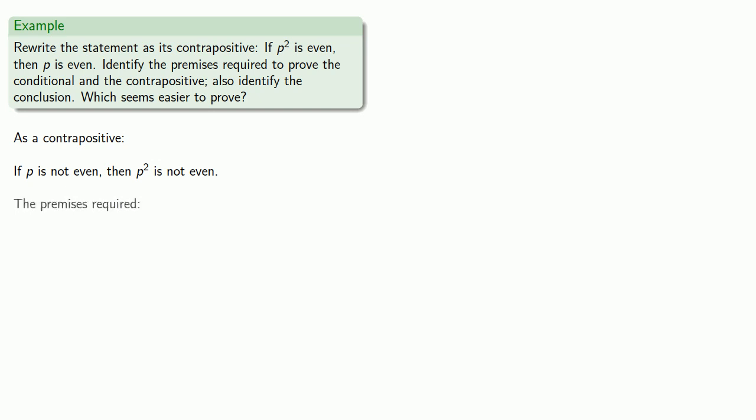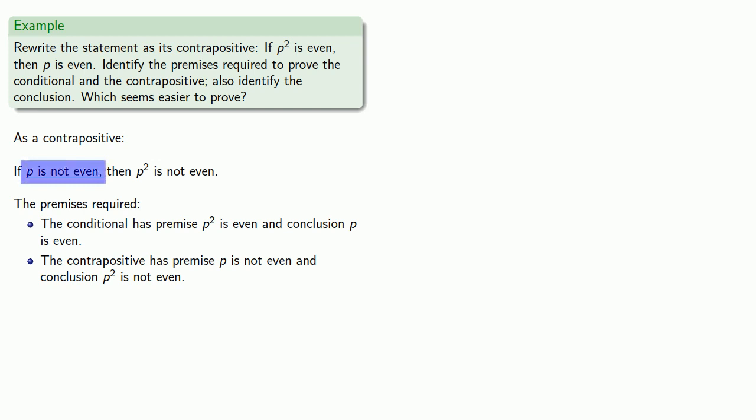Now let's take a look at our premises and our conclusion. The conditional itself has premise p² is even and conclusion p is even. The contrapositive has premise p is not even and conclusion p² is not even.